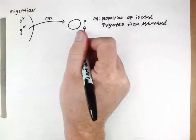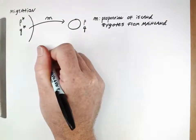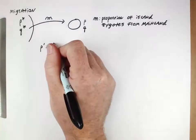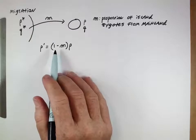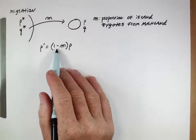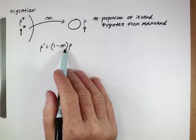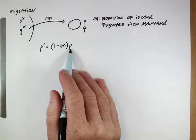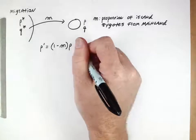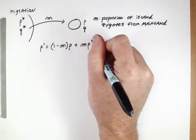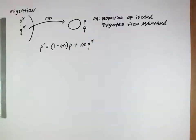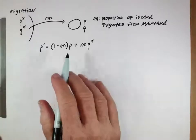Now let's think about the island: what would the new value of P be after one generation of migration? The proportion of individuals on the island not at all from the mainland is (1 − M) — those individuals reproduce among themselves and carry frequency P. Then we add in the proportion of individuals coming from the mainland, who arrive with frequency P*. So the frequency of the capital A allele on the island after one generation of migration is given by: P' = (1 − M)P + M·P*.